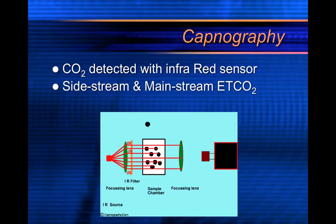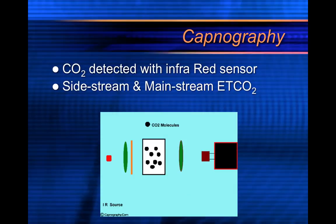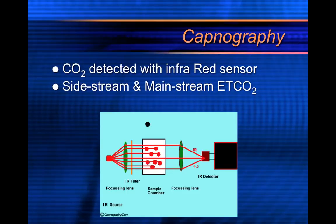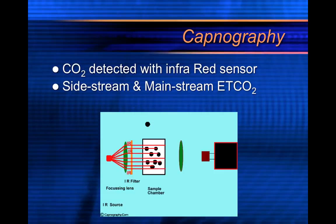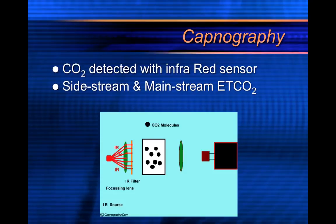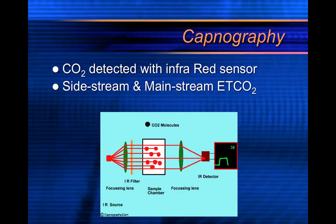CO2 is detected with infrared sensors, and there are two different kinds: sidestream and mainstream. Mainstream CO2 gives you the sampling of CO2 right at the device — for example, if you have a device attached directly to an endotracheal tube, giving you the reading right there at the ET tube, that's mainstream. Sidestream takes a sample through a thin tube all the way back to a monitor. The Zoll, LifePak, and Philips monitors all use sidestream, where a sample is taken back to the monitor and an infrared light at that monitor reads the end tidal CO2 value.